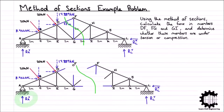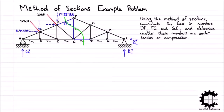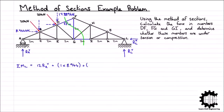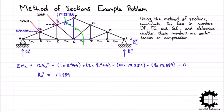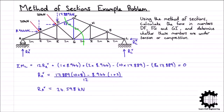To calculate RAV, we will consider the entire structure and take moments about node L, as this eliminates all unknowns except RAV. As the structure is in equilibrium, the sum of all moments about a point must equal zero. Taking anticlockwise rotation as positive, the sum of moments about node L is: 12·RAV + 1×8.944 + 2×8.944 − 10×17.889 − 8×17.889 = 0. Rearranging and solving, RAV = 24.598kN.